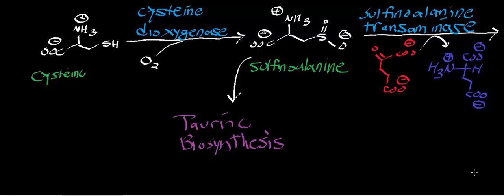Welcome back. This should be a really short and to the point video. In this video, we're going to look at the degradation pathway for cysteine. And as we'll find, the degradation of cysteine to pyruvate occurs in two enzymatic steps.